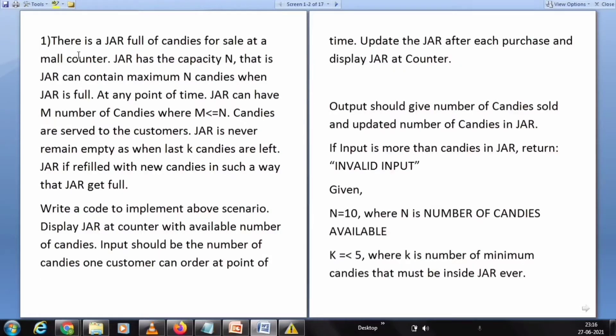In the first question, a scenario is given and you need to crack this scenario and write a program for it. There is a jar full of candies for sale at a mall counter. The jar has the capacity N. That is, the jar can contain maximum N candies when the jar is full. At any point of time, the jar can have M number of candies where M is less than or equal to N. Candies are served to the customers. The jar never remains empty as when last K candies are left, the jar is refilled with new candies in such a way that the jar gets full.